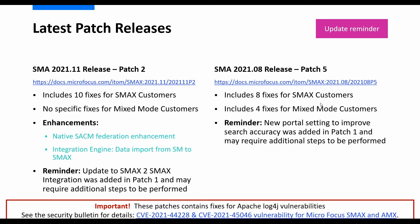There is a particular feature that requires potentially some additional steps after the patch has been applied — that came out in patch one and relates to some improvements done on search accuracy. For customers on 2021.11, we're already on patch two since it's only been a couple of months since the release. With that, we've got 10 fixes for SMAX customers but no specific fixes for mixed mode in that particular patch. A couple of enhancements include a second Federation enhancement and something related to our integration engine and the data import from SMA to SMAX. Also in patch one for the integration engine, there was an update for the SMAX to SMAX integration — if you're utilizing that, check those required additional steps.